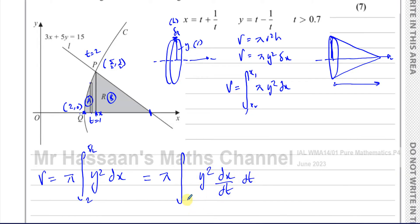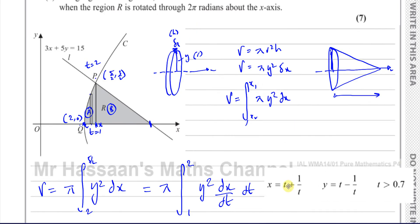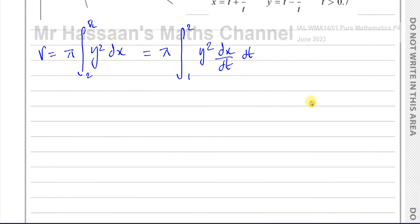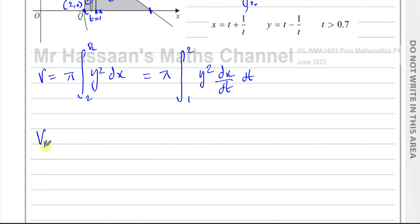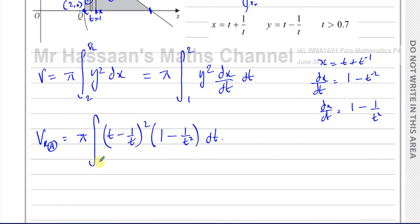The limits in terms of t are t = 1 and t = 2. We know y = t − 1/t, so y² = (t − 1/t)². And dx/dt: since x = t + t⁻¹, we get dx/dt = 1 − t⁻² = 1 − 1/t². So the integral becomes π∫₁²(t − 1/t)²(1 − 1/t²) dt.